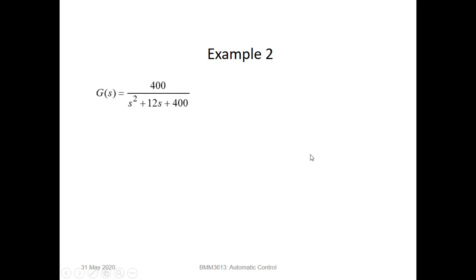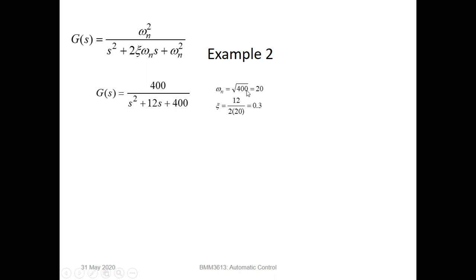Let's look at example number 2. Given a transfer function G(s) equals 400 divided by s-squared plus 12s plus 400, by using the definition, we can determine the natural frequency is 20 and the damping ratio is 0.3. Since the damping ratio is between 0 and 1, the system is under-damped.